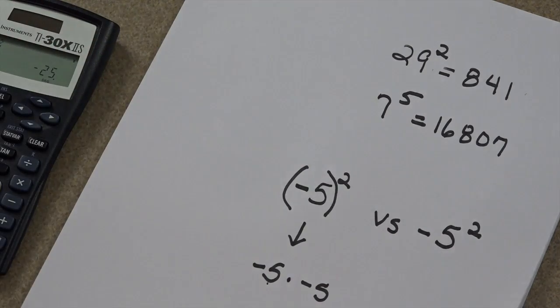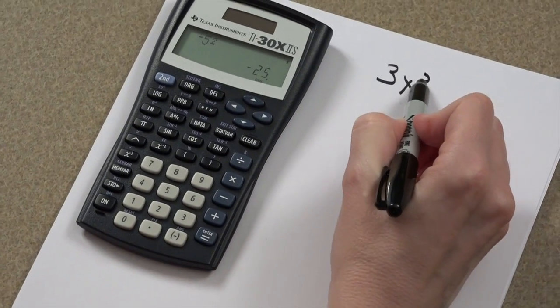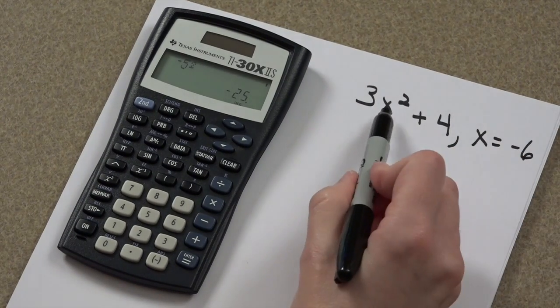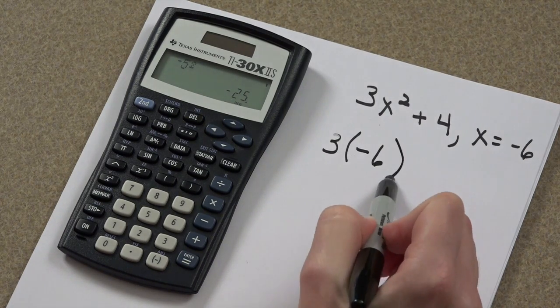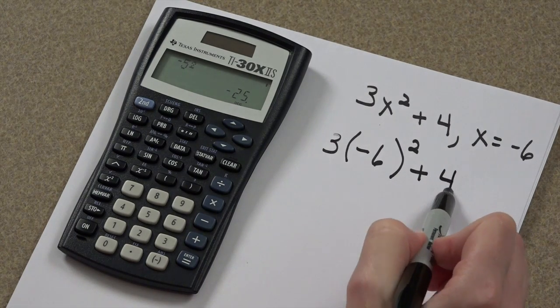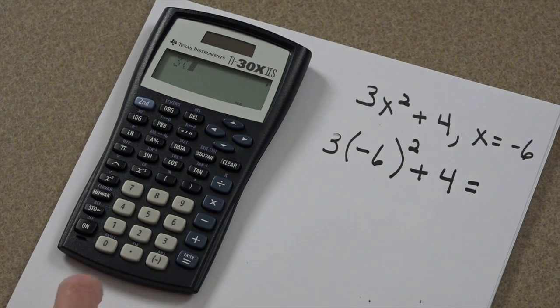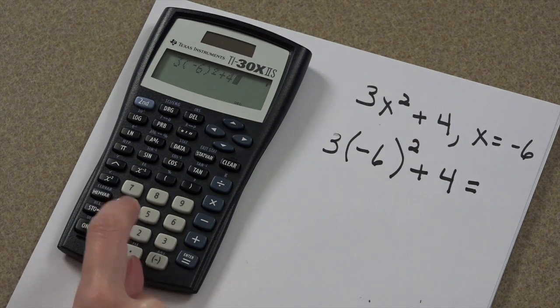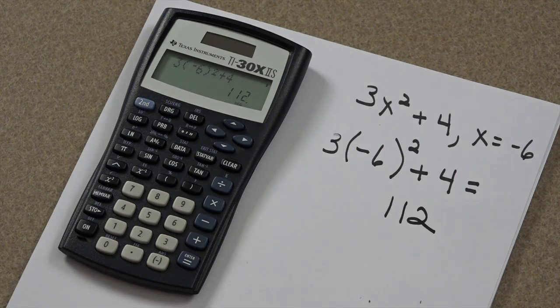Specifically, let's say we have some substitution to do. 3x squared plus 4. We want to substitute a negative 6 in for this x. The translation, then, for our calculator is the parentheses. So we'll go 3, parenthesis, negative 6, parenthesis, squared, plus 4. Your calculator covers all of that for you. Your answer is 112.